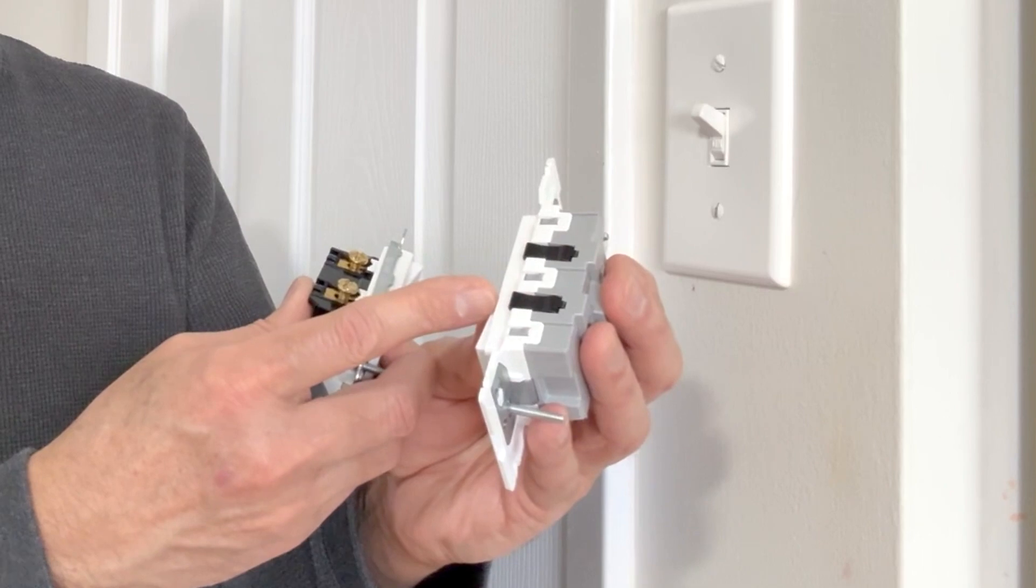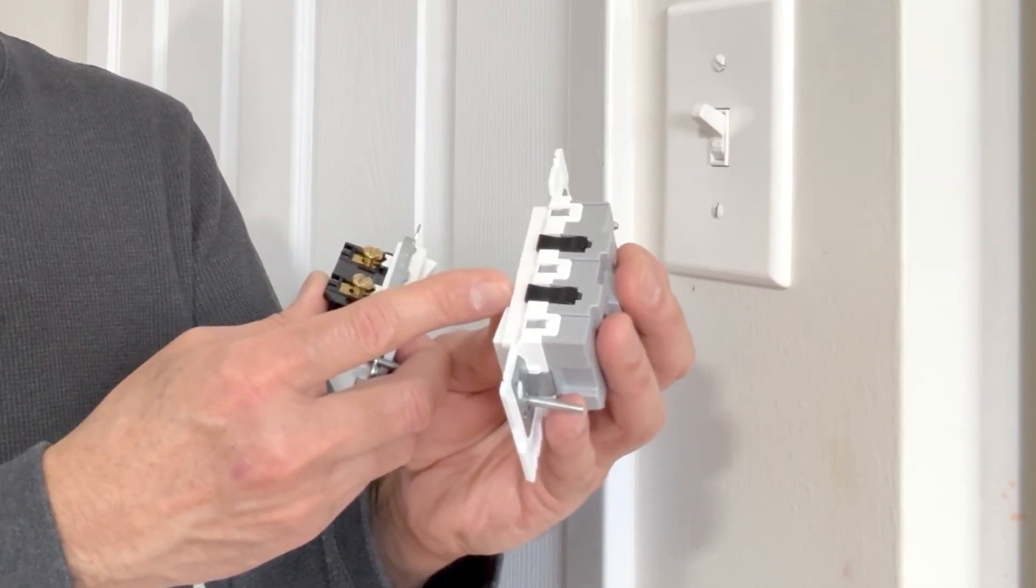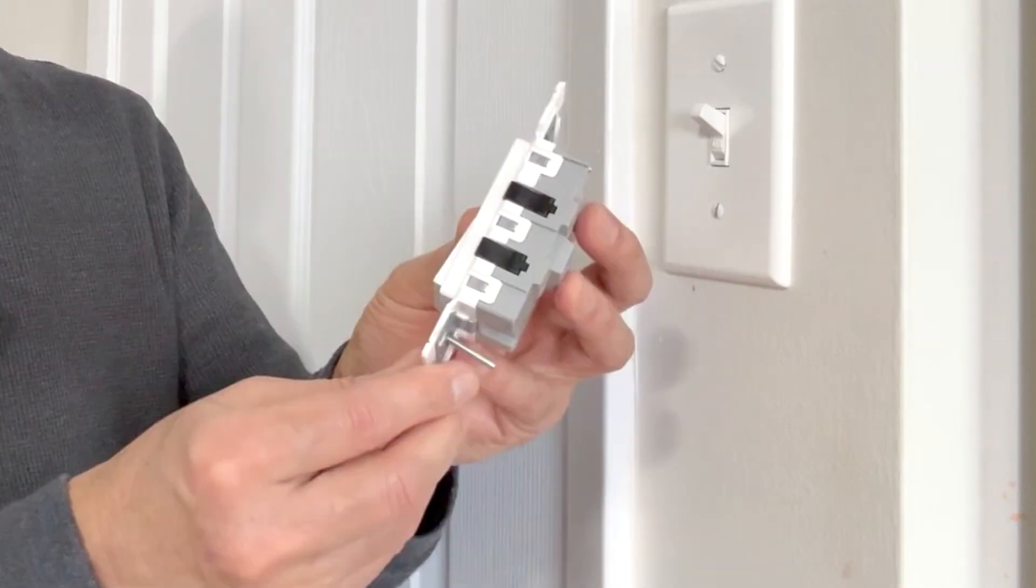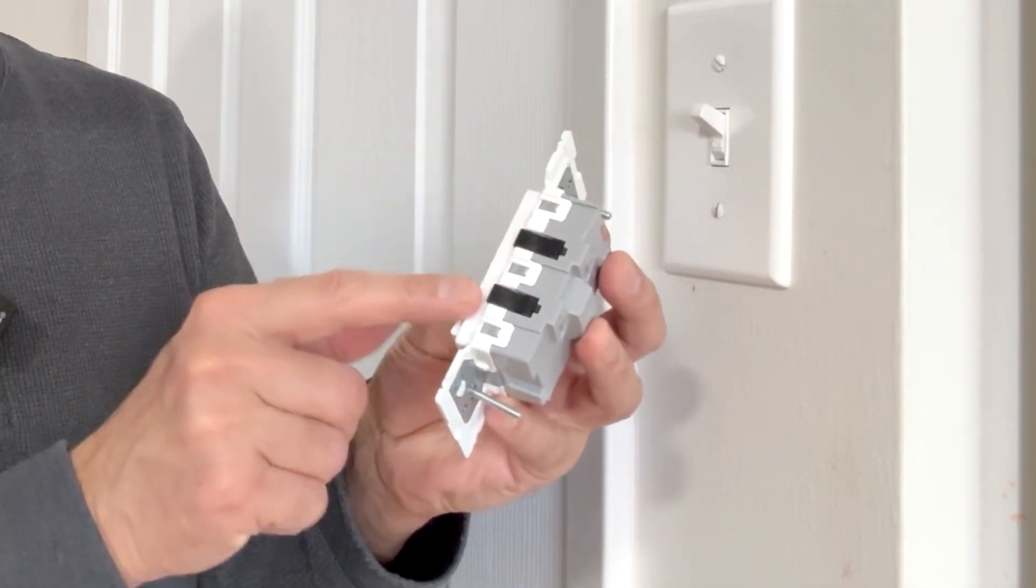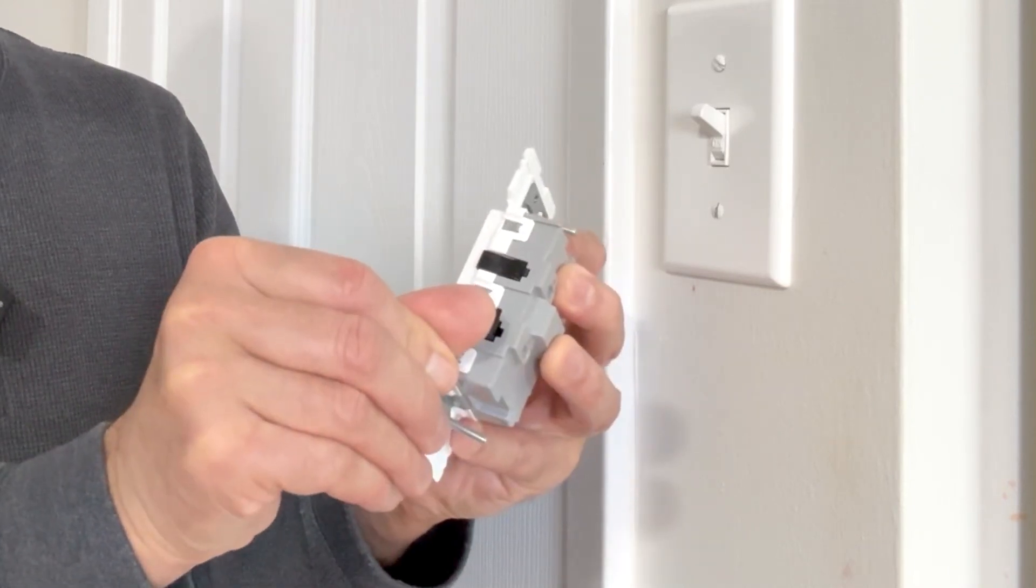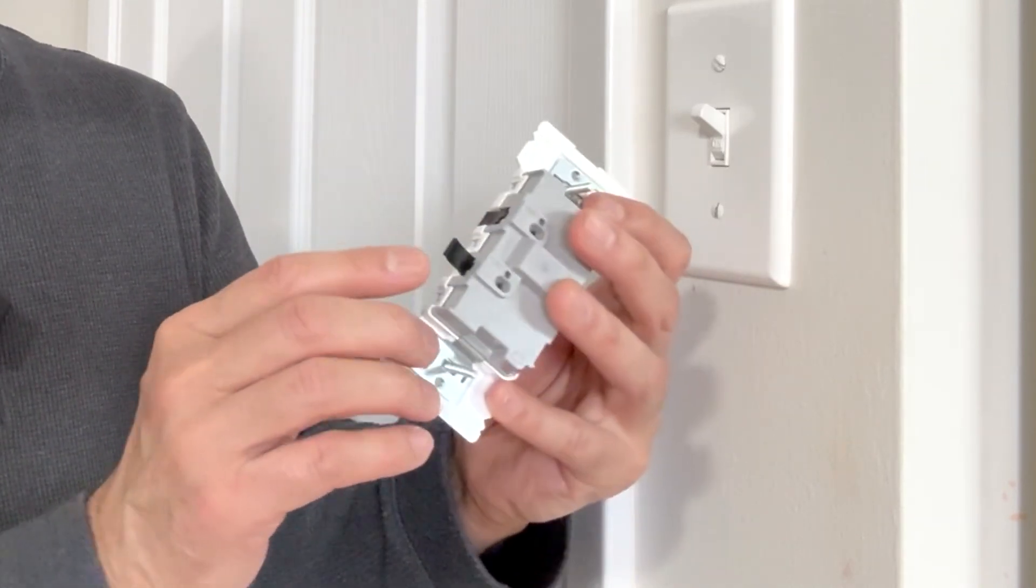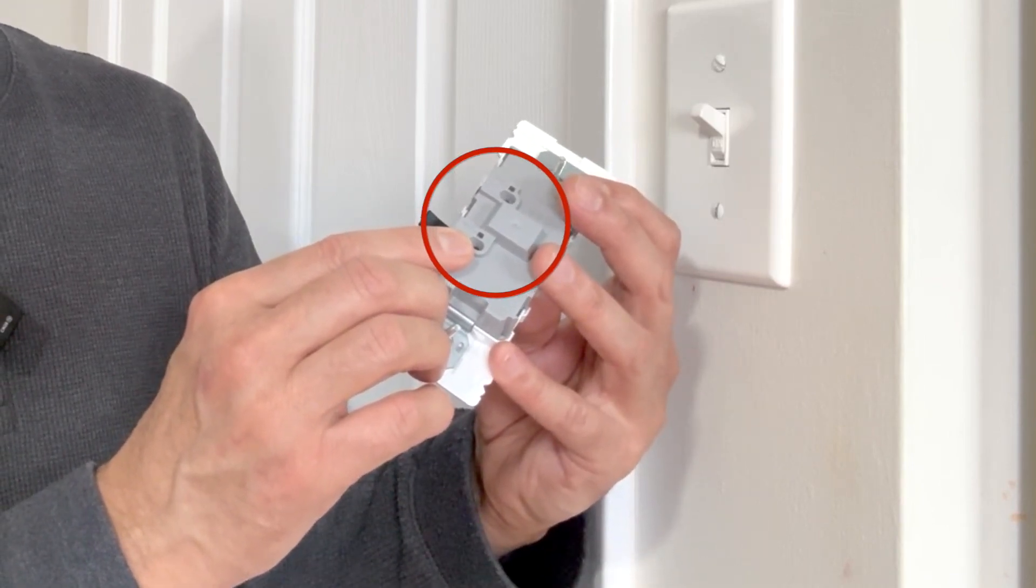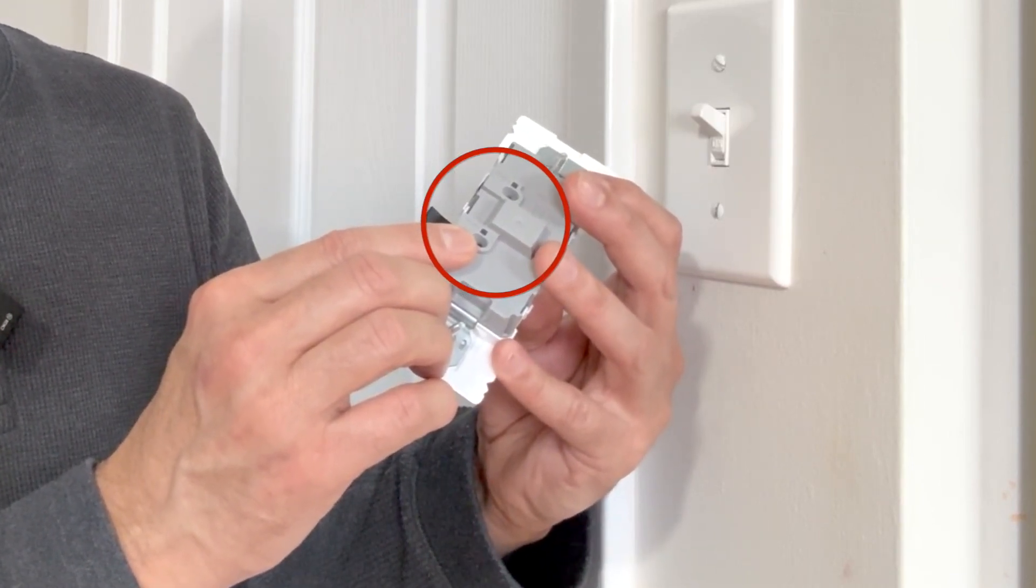These connectors are very similar to Wago style lever nut connectors but I would say they are much stronger than the Wago lever nut connectors. So as I said there are no exposed metal parts, there are no screws to which you tighten the wires. Pull out the lever, insert the wire on the back side. This is not like backstabbing, this is actually called back wiring, not backstabbing.